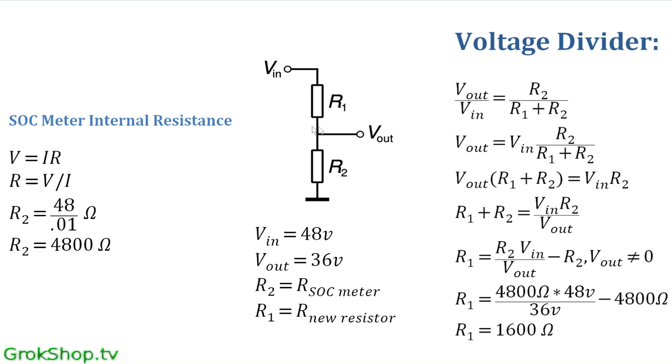Doing the math gives us a desired R1 of 1600. So if I place a 1600-ohm resistor between the 48-volt supply and the input to the state of charge meter, I should get a state of charge reading that reads as if it's still reading across 36 volts.